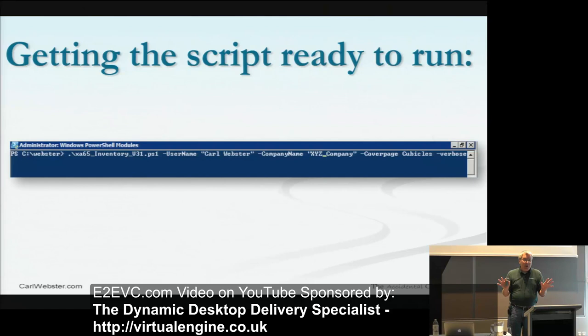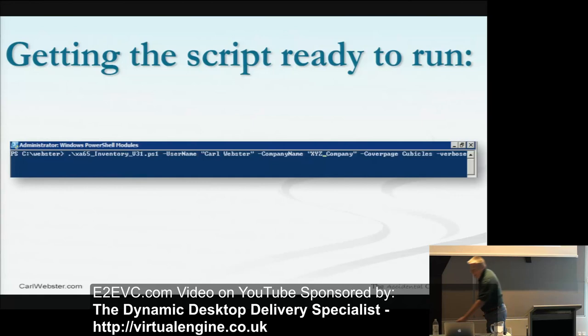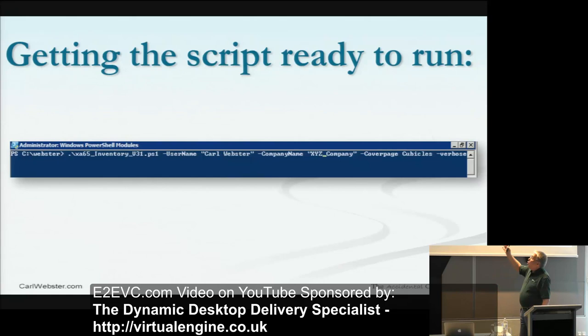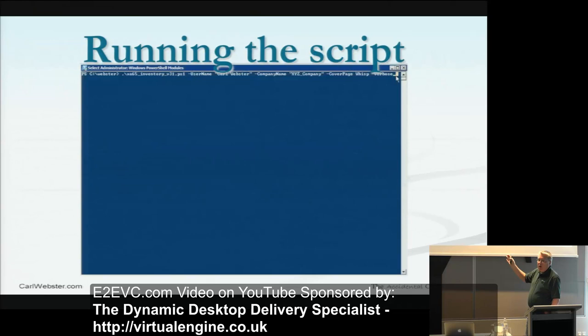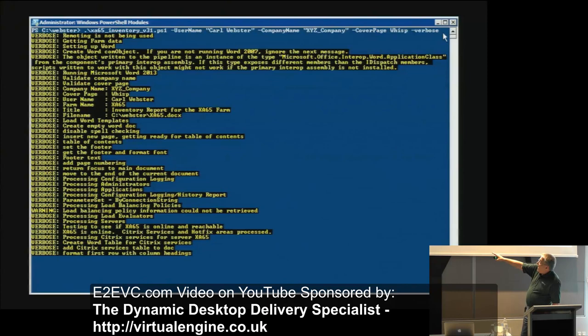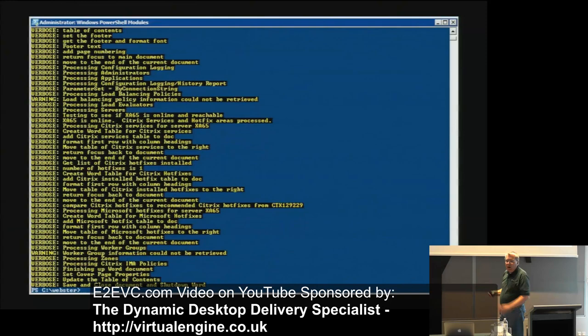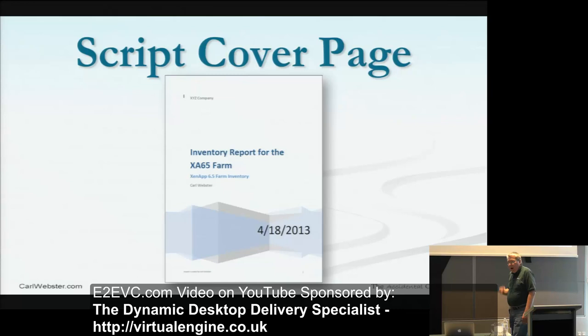Once the script finishes, we get our cover page, we get our table of contents. When I ran the PVS script at that customer site, I didn't like the table of contents, mainly because the table of contents was 89 pages long. All the 'name colon' stuff — to me, that's not table-of-content-y. So I cleaned that up and fixed it for the PVS script, and I'm going to go in and add that for the ZenApp 5, 6, and 6.5 scripts as well.